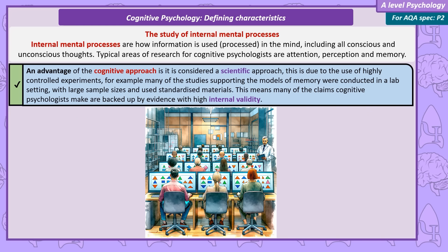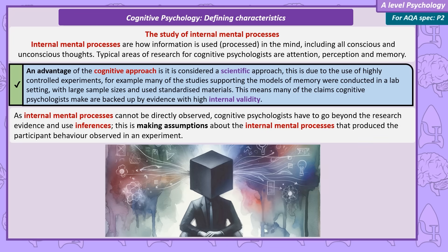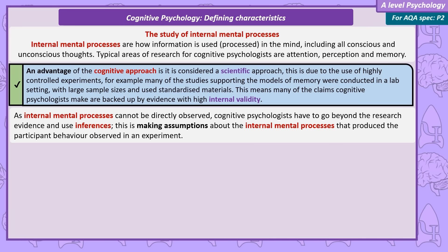It's also important to know how cognitive psychologists study internal mental processes. Cognitive psychologists try to be as scientific as possible by conducting highly controlled experiments with large samples of participants. Often, cognitive research will be conducted in a lab setting and the materials used will be highly standardised. This is good as the experiments have high internal validity. But studying internal mental processes is problematic, because they cannot be directly observed. This means cognitive psychologists have to rely on making inferences — going beyond the research evidence and making an assumption about the internal mental processes that produce the participants' behaviour.